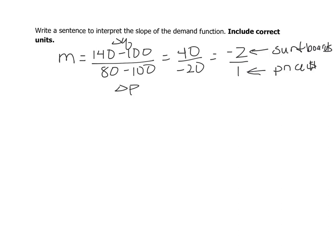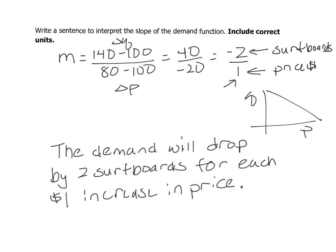What this is telling us is that our demand is going to drop by 2 surfboards when we increase that price by $1. The sentence is, the demand will drop by 2 surfboards for each $1 increase in price.